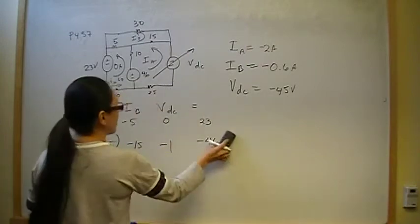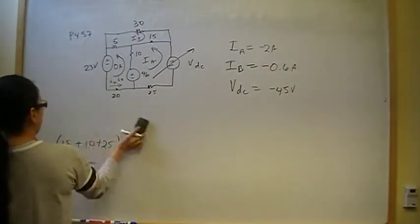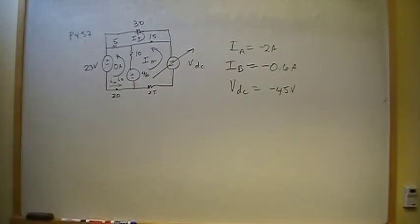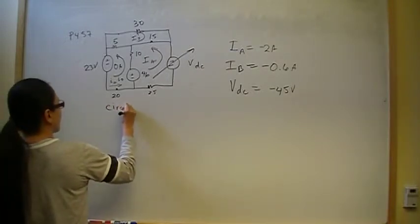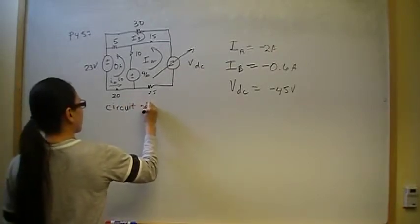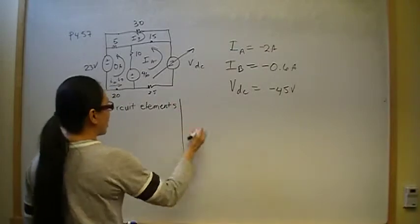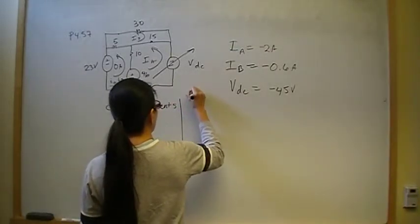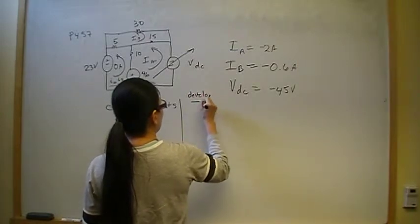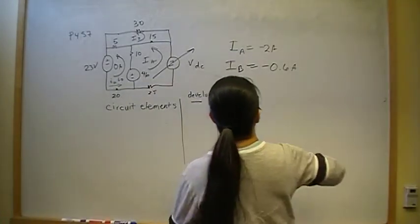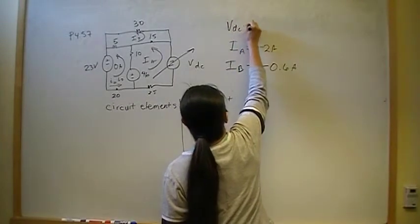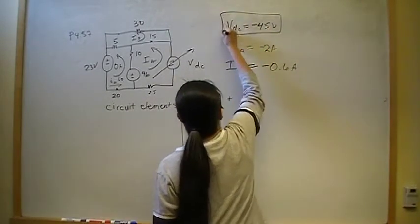So what were we looking for? We were looking for V_dc, and it is 45 volts. That's the answer for Part A.